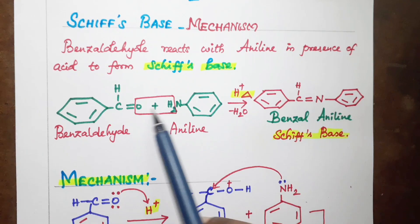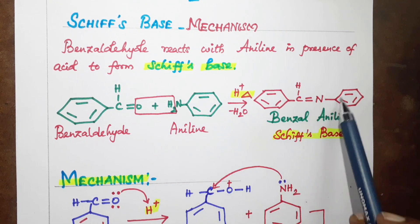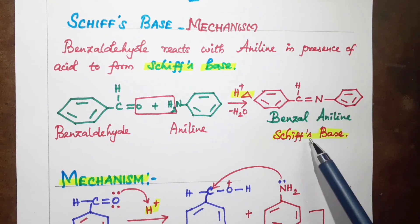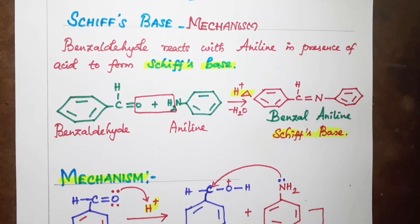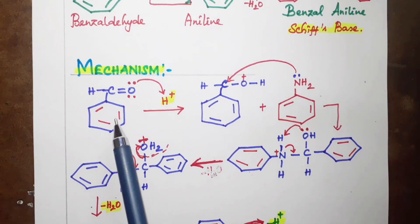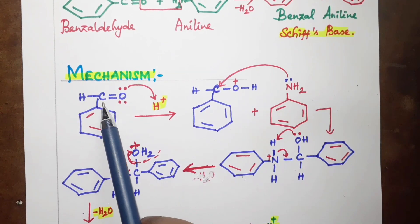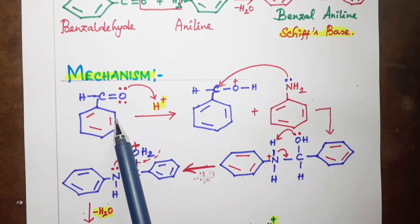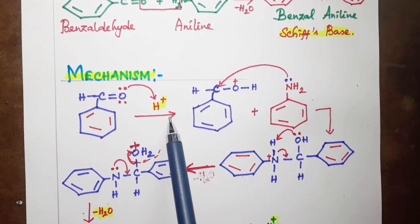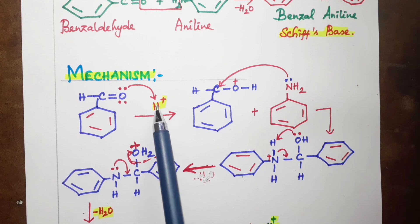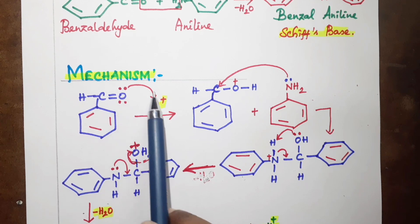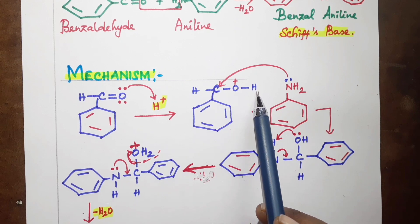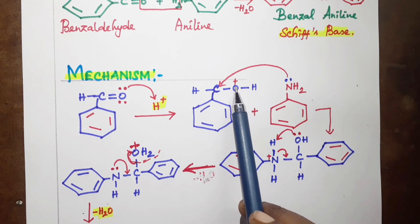Benzaldehyde formula C6H5-CHO: the oxygen has a lone pair of electrons. In the presence of acid, H+ is added. The lone pair of electrons on oxygen attacks H+, forming an O–H bond, and oxygen acquires a positive charge.